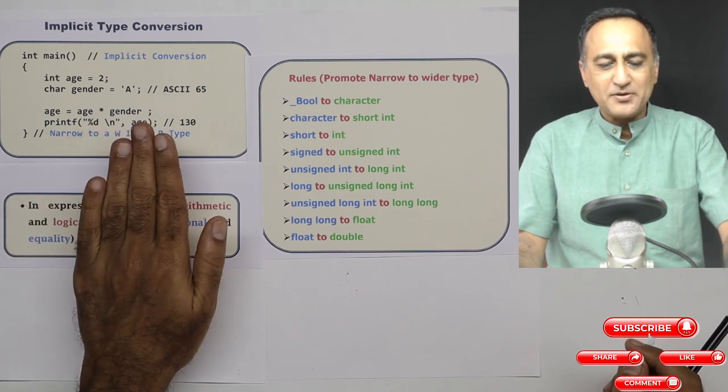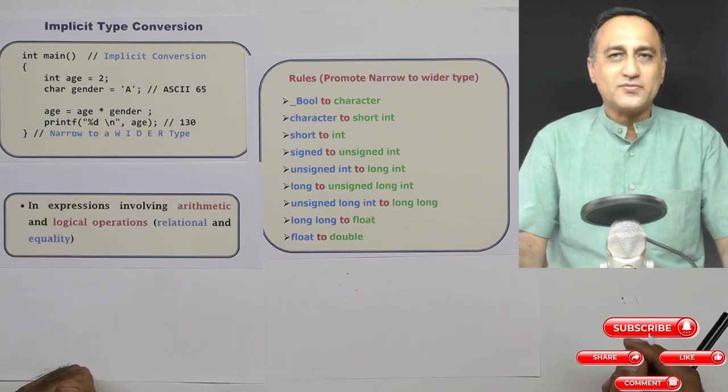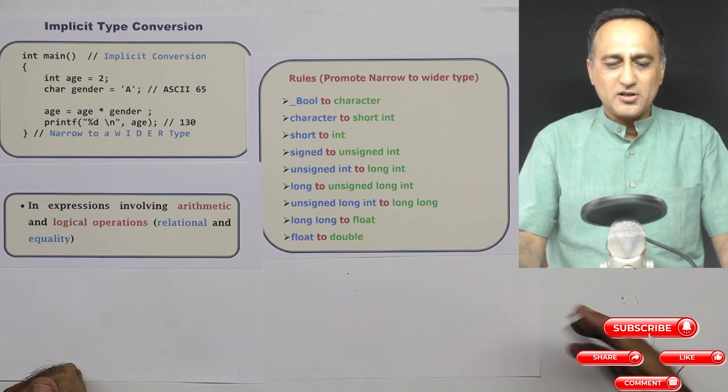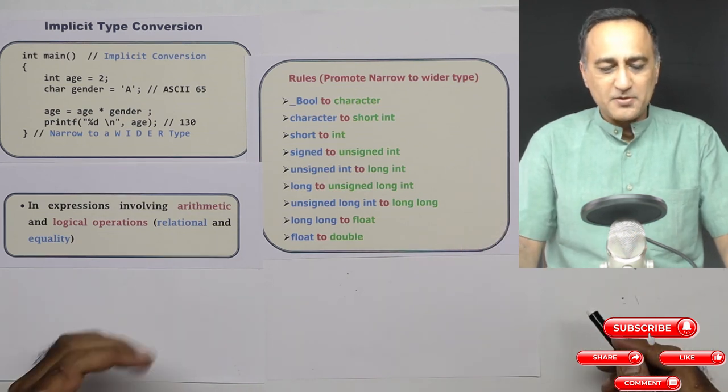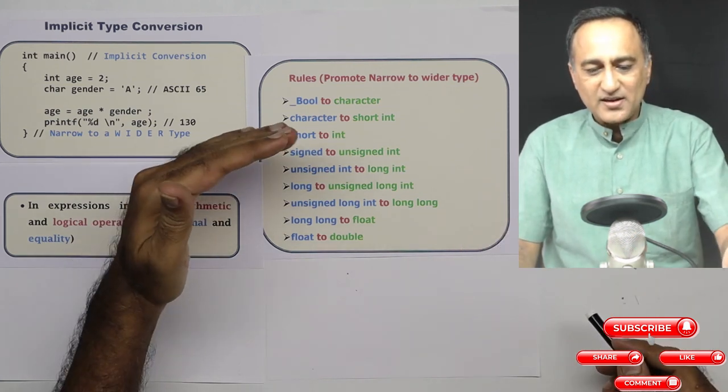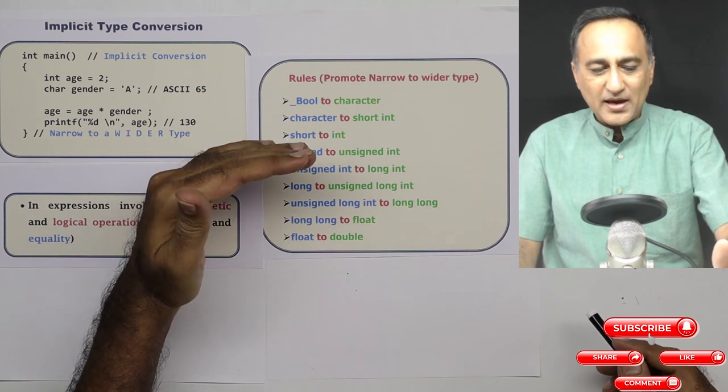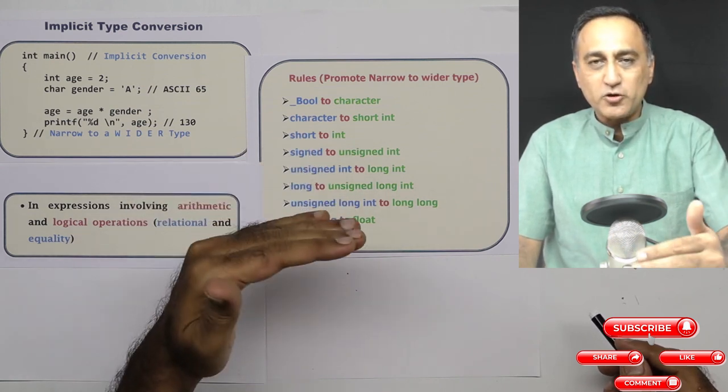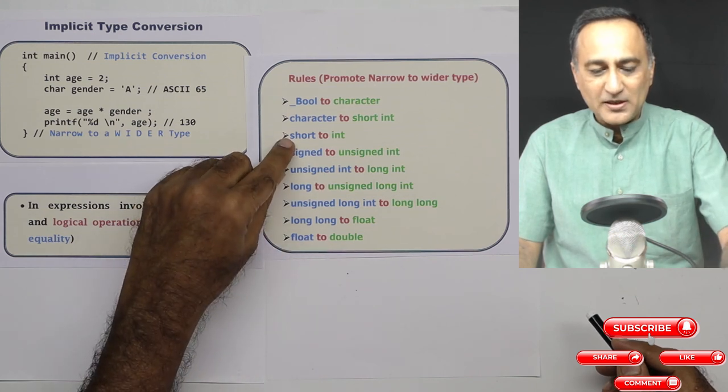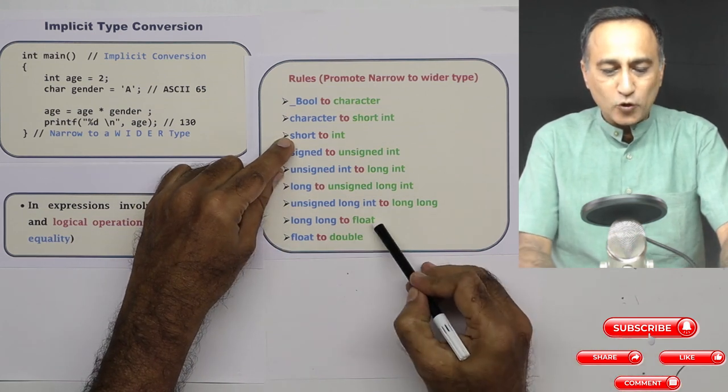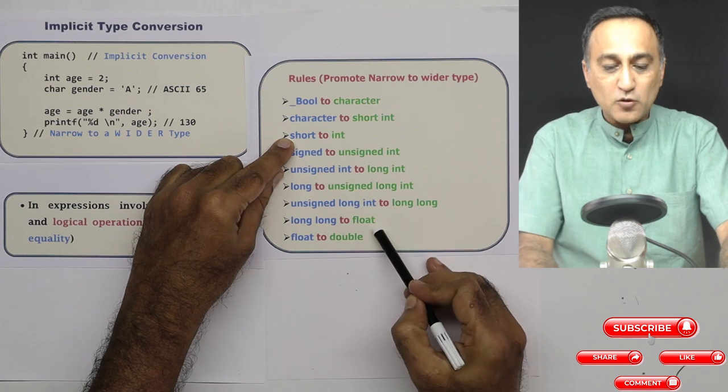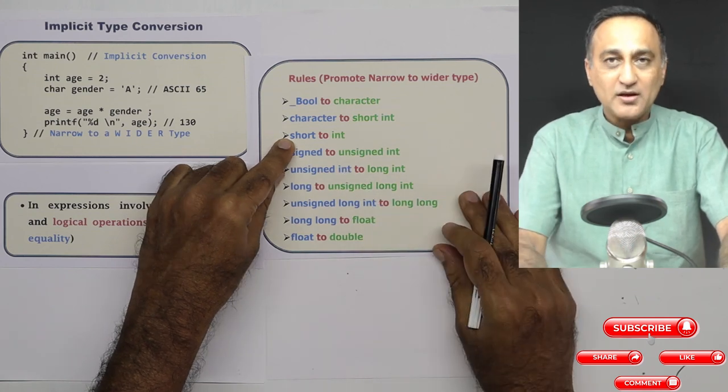So as we do a few examples during the course of the C programming lectures, you will get a very clear idea of it. But just be sure you understand that a lower data type having a narrow width is promoted to a higher data type. For example, if I'm multiplying a short with a float, the short int is going to be promoted to a float, not the other way round.